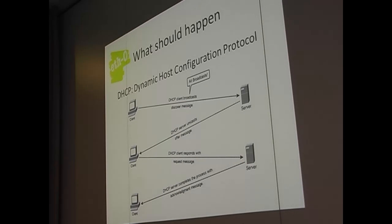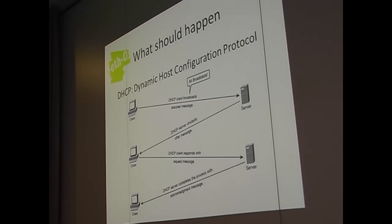One or more servers answer with an offer: here's an IP address and some other settings for you. A client might receive multiple offers — it usually takes the first one. The client then requests that specific IP address from the server, and if everything goes well, the server sends an acknowledgement: you can have it, it's yours. Your laptop now has an IP address.